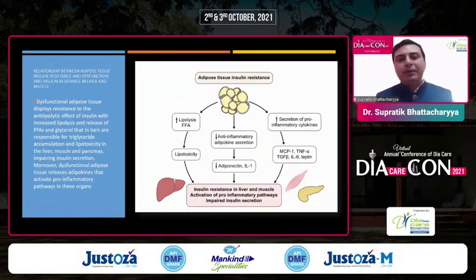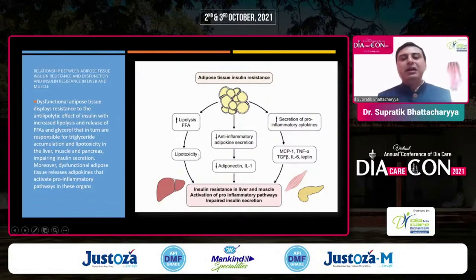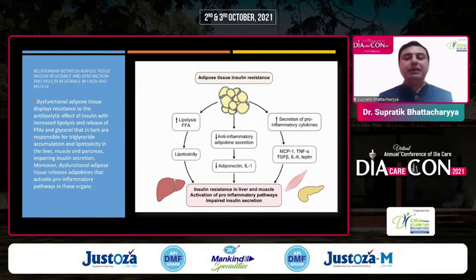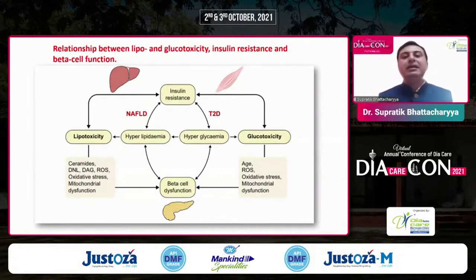Talking about adipose tissue insulin resistance, you see increased lipolysis and increased free fatty acids, along with decreased anti-inflammatory adipokine secretion and increased secretion of pro-inflammatory cytokines. All of them add on to increased insulin resistance in the liver and muscles, and there is activation of pro-inflammatory pathways and impaired insulin secretion. As Di Fronzo always believed, insulin resistance is the key that leads on to all other pathophysiologies.